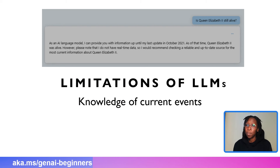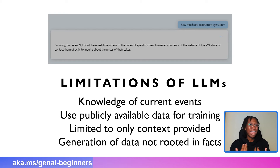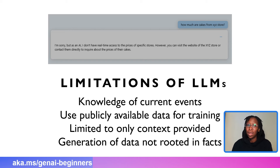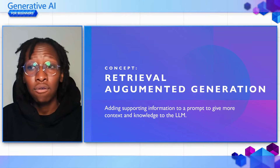Currently our LLMs have a couple of limitations. For example, the limitation around knowledge of current events — if you ask the AI model about a recent event, it will tell you 'as of my last update in October 2021.' Another limitation is around your own personal data, since it was trained using publicly available data. So if I want to ask the price of cakes from a specific store, it will tell me 'I'm sorry, as an AI model I cannot tell you the real-time pricing of specific stores.' The other limitation is around the context provided — the responses generated might not be rooted in fact.